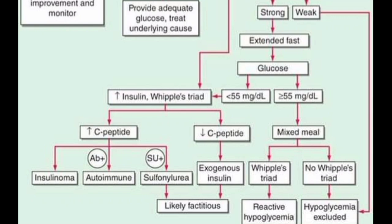If C-peptide is decreased, we check if the patient is using exogenous insulin — meaning the patient is taking insulin or has some drug-related diabetic condition. This covers all the conditions of hypoglycemia and the step-by-step approach — how we go and exclude and rule out other diseases, do the differential diagnosis of hypoglycemia, and approach patients who have decreased glucose levels with confusion or other hypoglycemic conditions.